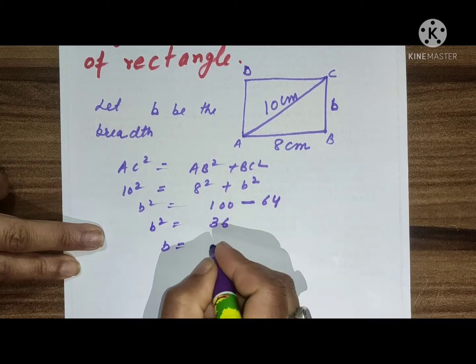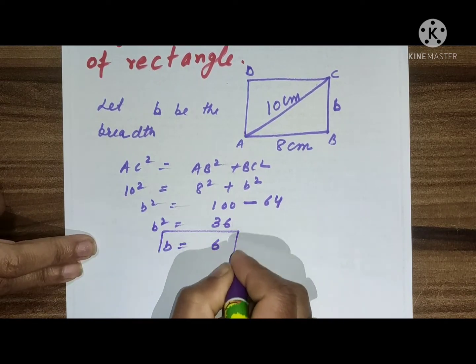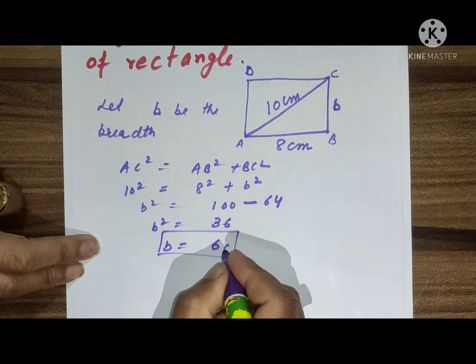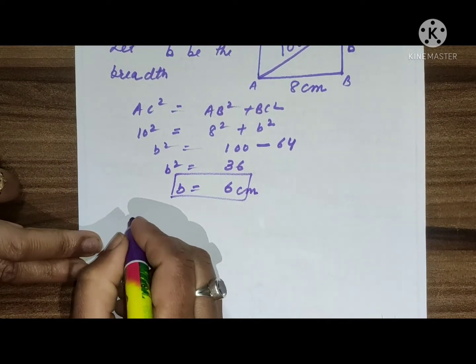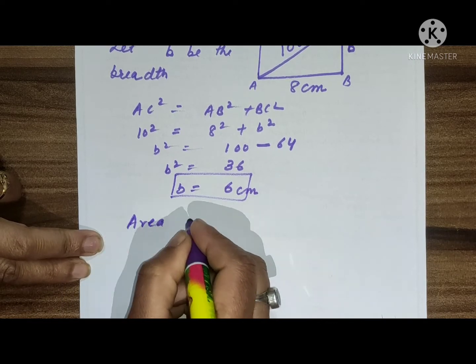So b = 6. The breadth of the rectangle is 6 centimeters. Then we will find the area. So area of